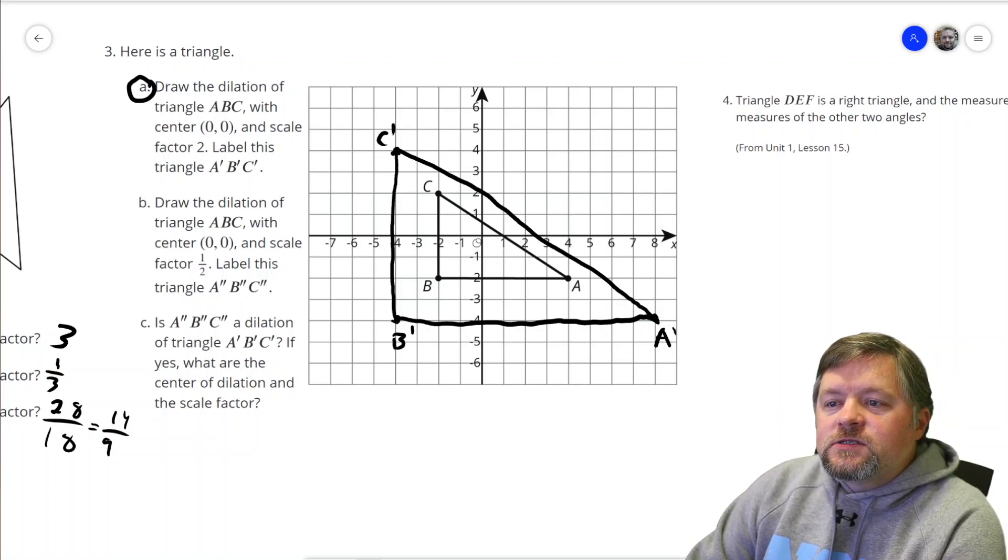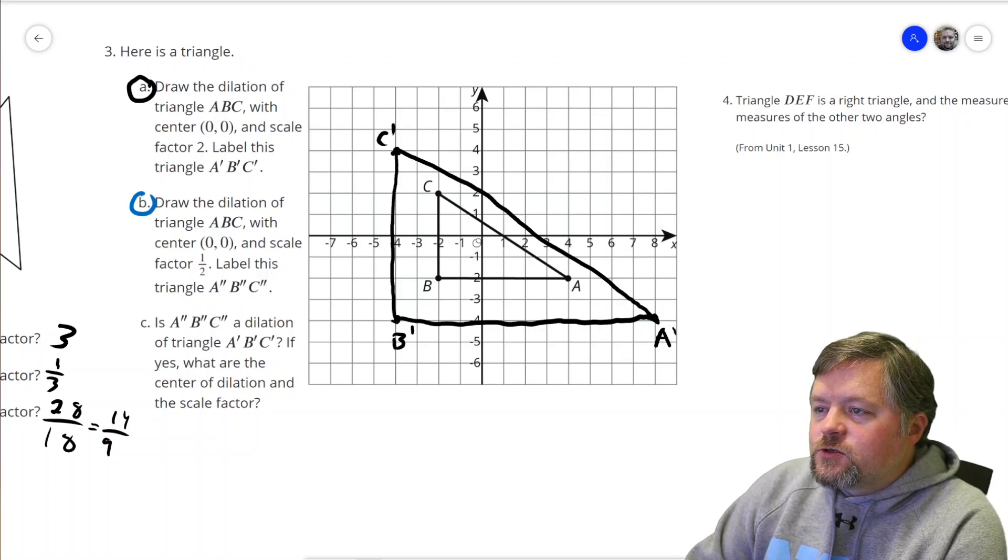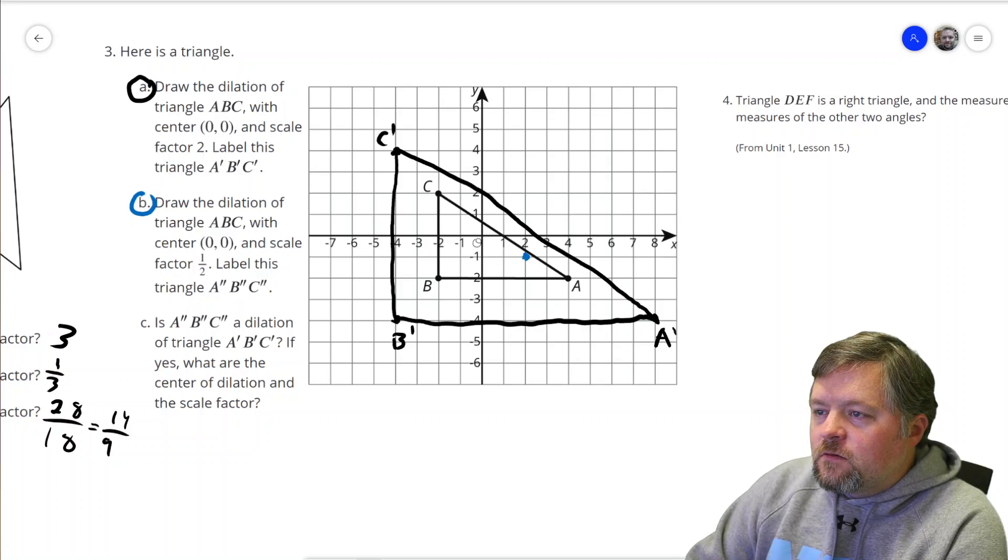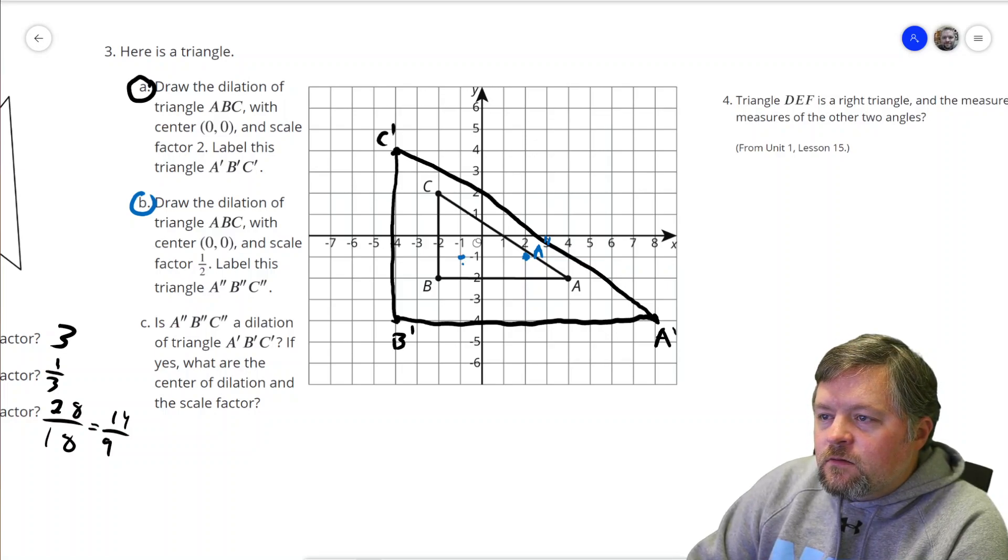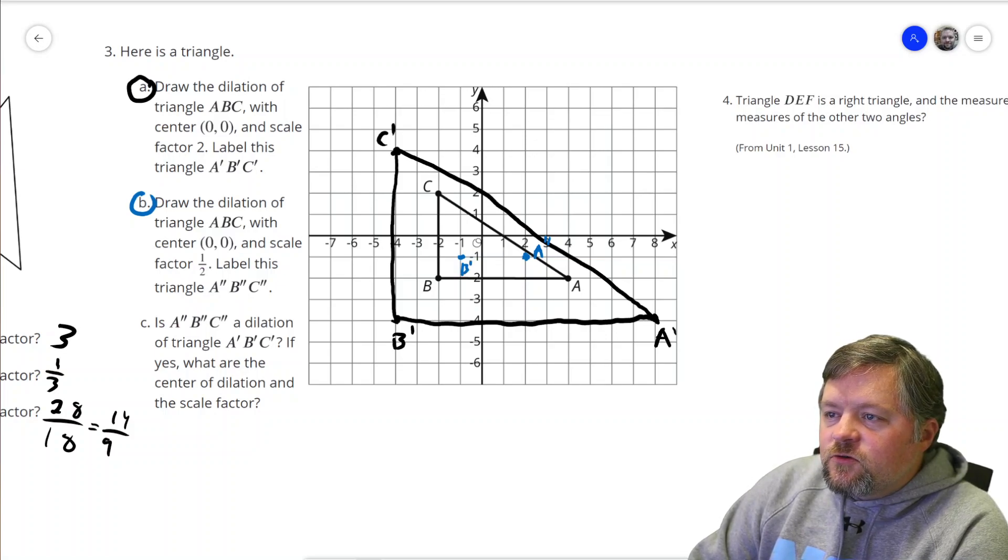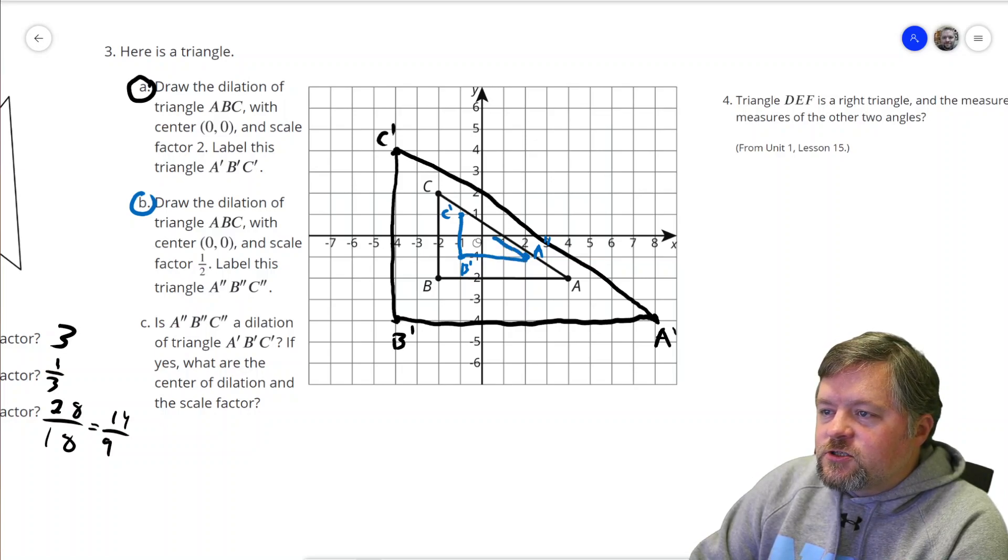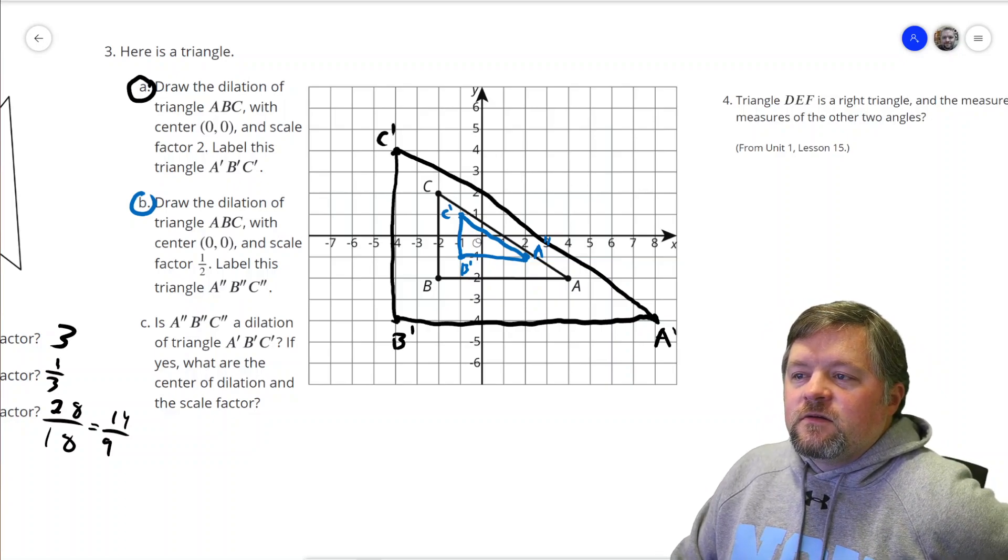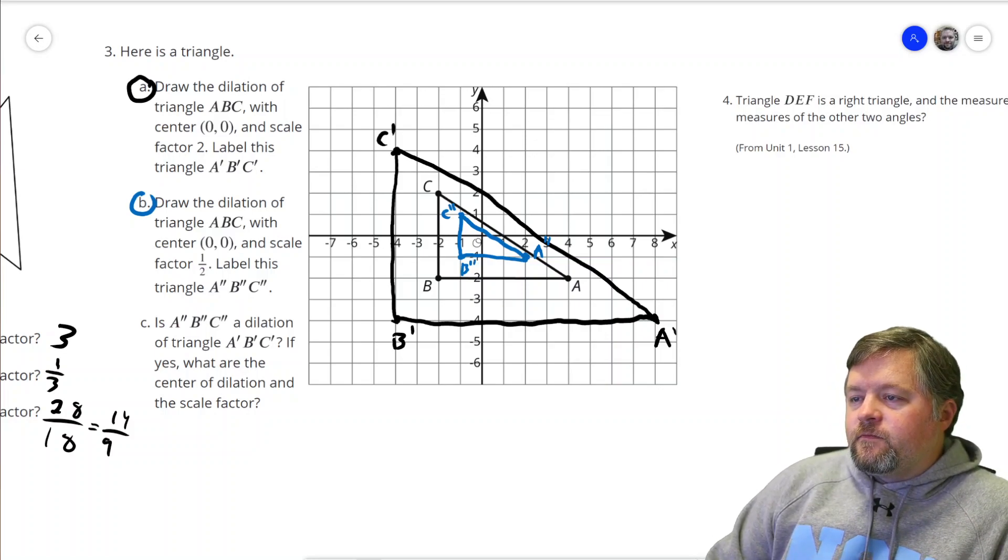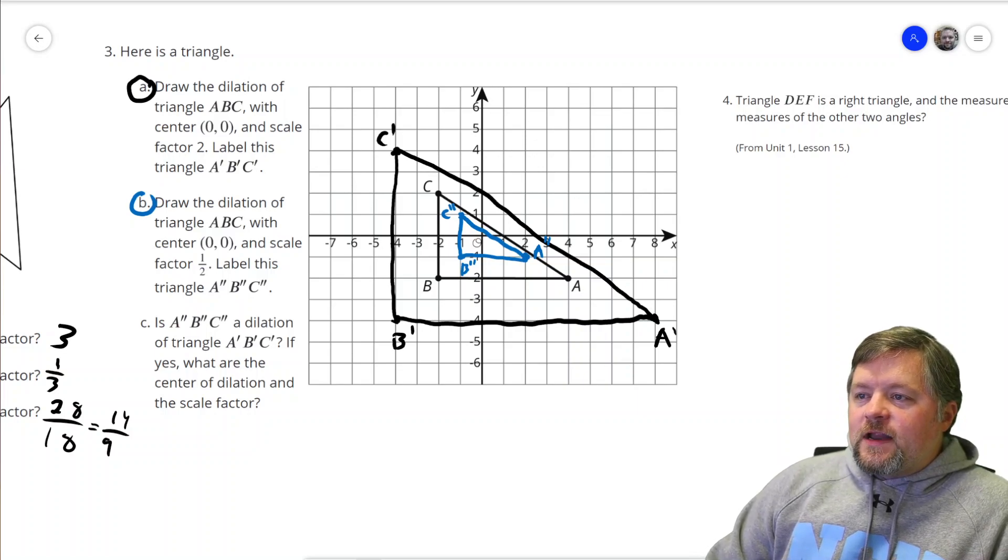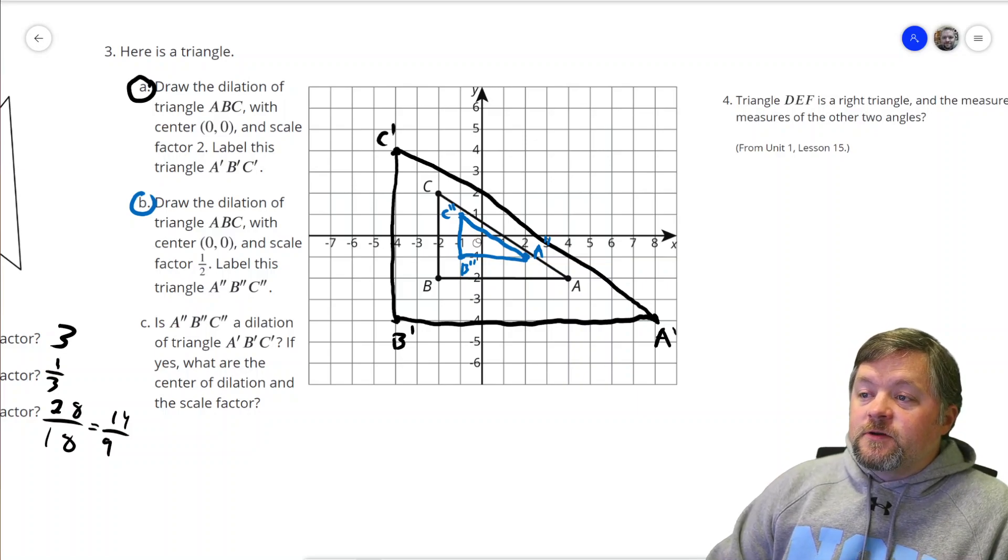Okay. That was A. B, we want to do it center of (0,0), scale factor of 1/2. So A is (4,2), which will become (2,1). A double prime. B (2,2) will become (1,1). And C is (2,2), which will also become (1,1). And those are not actual point values. That's just how many units from our center of dilation we are. Scale factor of 2 made it larger. Scale factor of 1/2, it's less than 1, made it smaller. Or it's between 0 and 1, so it made it smaller.